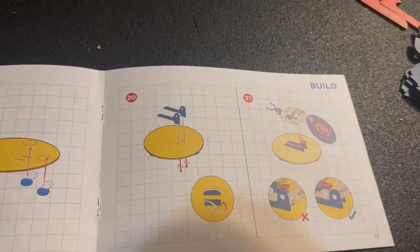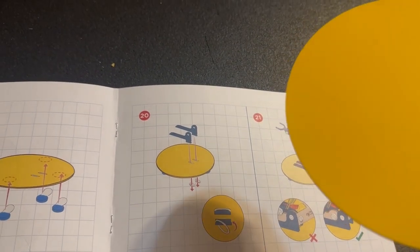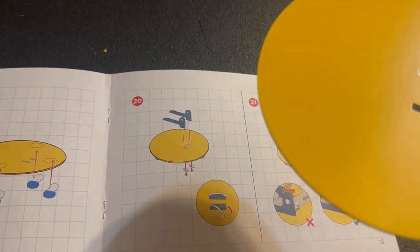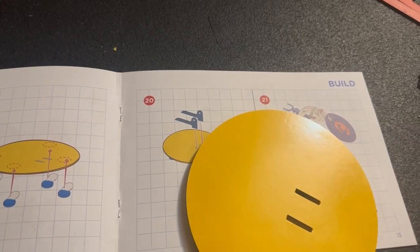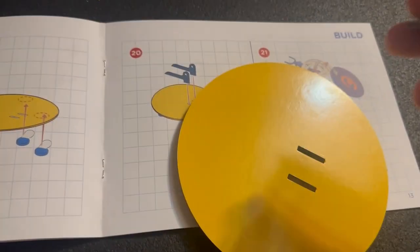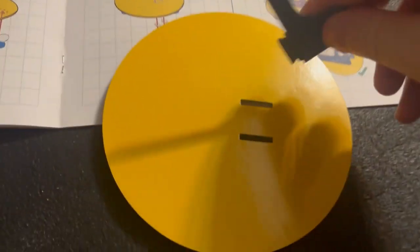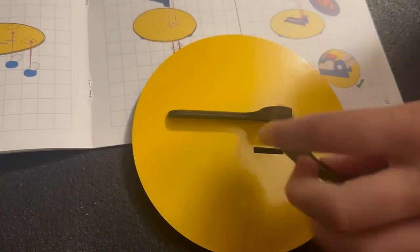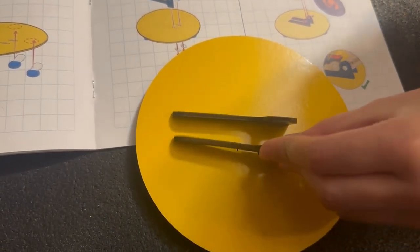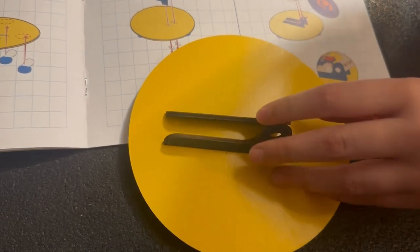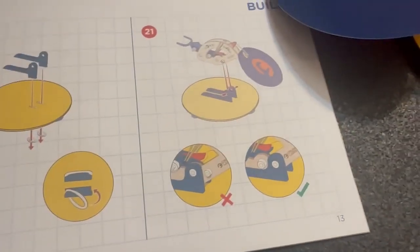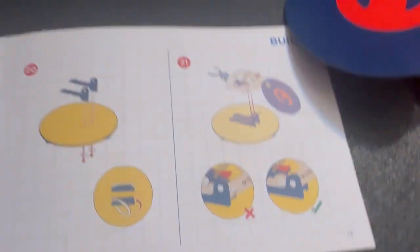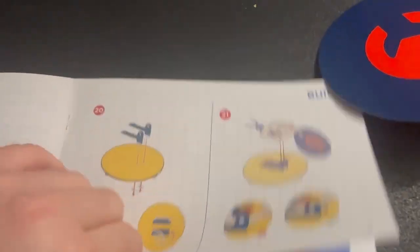Which side? Well, it looks like we're putting the hatchet bottoms this way, it looks like, like that. And then we'll flip that over and put our o-rings on. All right, so it looks like we have that lined up properly now. Let's go to step twenty-two.